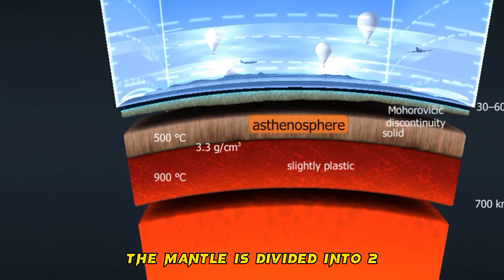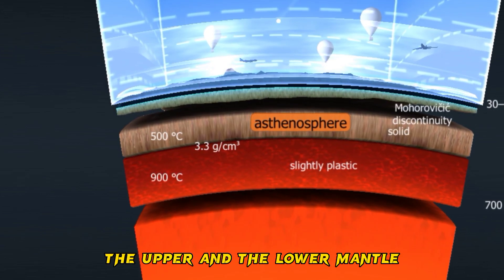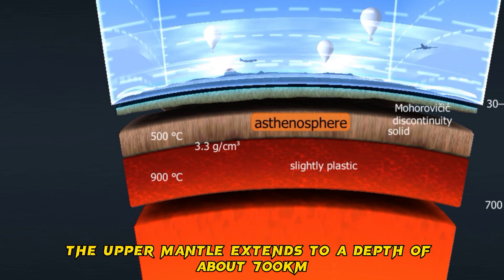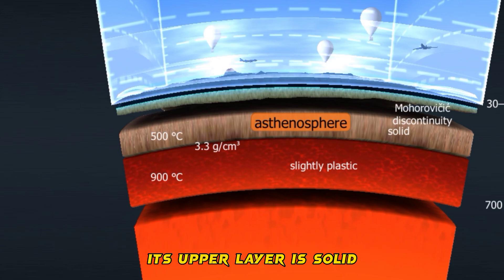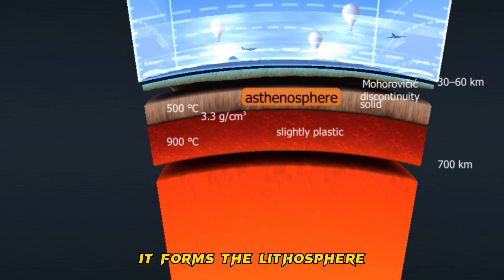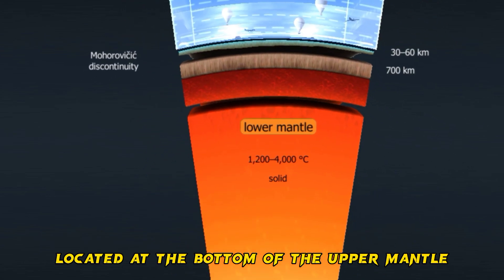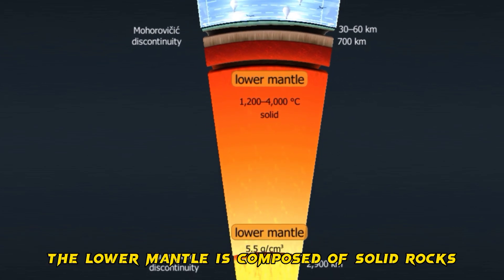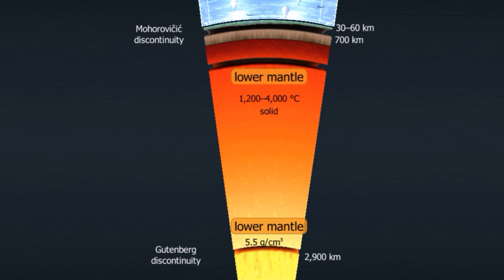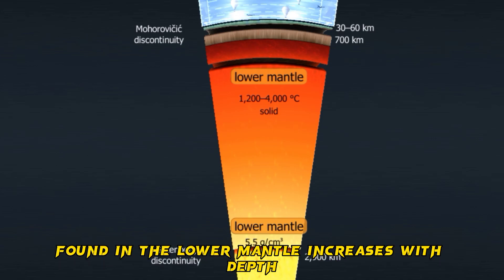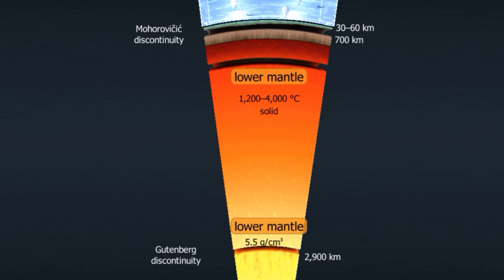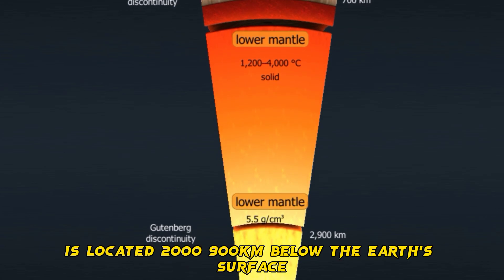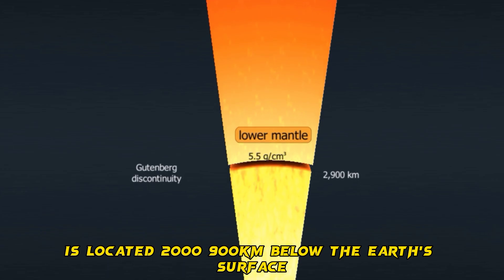The mantle is divided into two zones: the upper and the lower mantle. The upper mantle extends to a depth of about 700 kilometers. Its upper layer is solid and, together with the crust, forms the lithosphere. The molten layer at the bottom of the upper mantle is called the asthenosphere. The lower mantle is composed of solid rocks, with heavier metallic components increasing with depth. The mantle-core boundary, called the Gutenberg discontinuity, is located 2,900 kilometers below the Earth's surface.